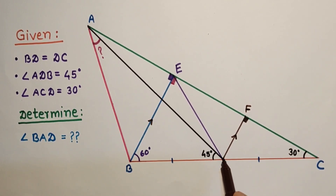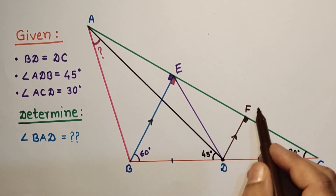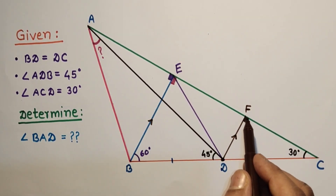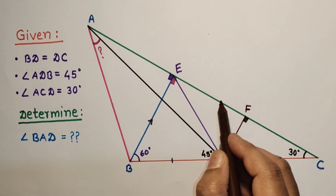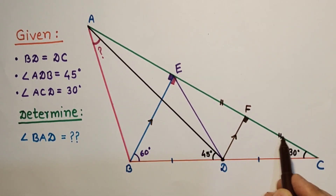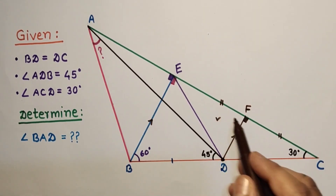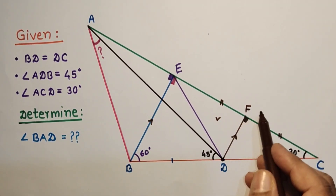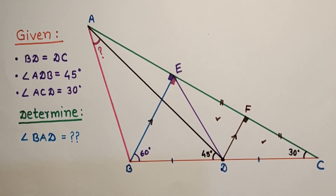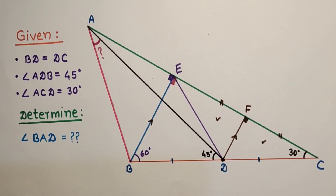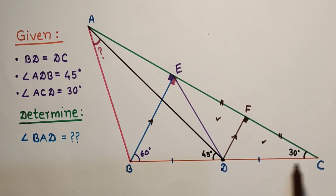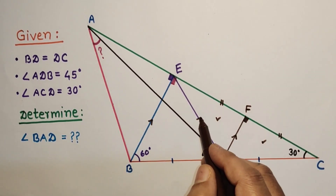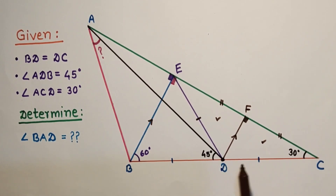By the converse of the midpoint theorem, since D is the midpoint of BC and DF is drawn parallel to BE, point F will also be the midpoint of EC, meaning EF equals FC. Considering the two triangles DEF and DCF: EF equals FC because F is the midpoint, DF is common to both triangles, and both angles at F are 90 degrees. By the Side-Angle-Side congruency test, the two triangles are congruent, so DC equals DE.